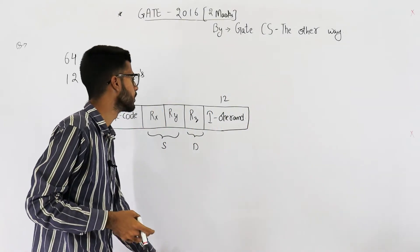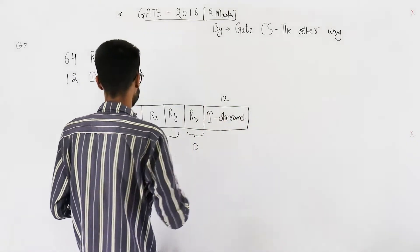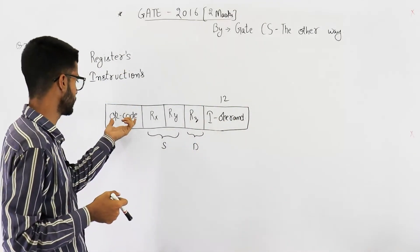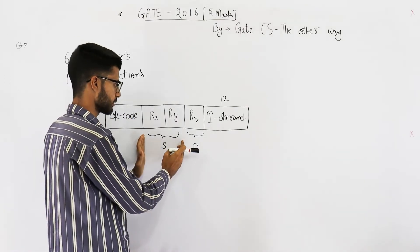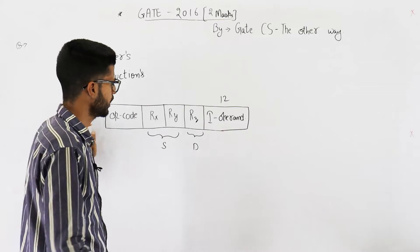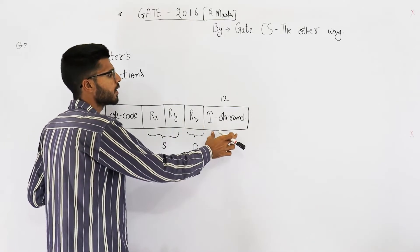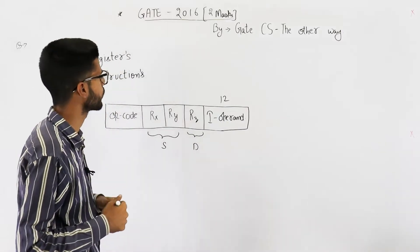First thing is, you are given this format of instruction. That means there is an opcode. Then you have these two source registers. I am representing them by Rx and Ry. Then you have this destination register, say Rz, and an operand of 12-bits.